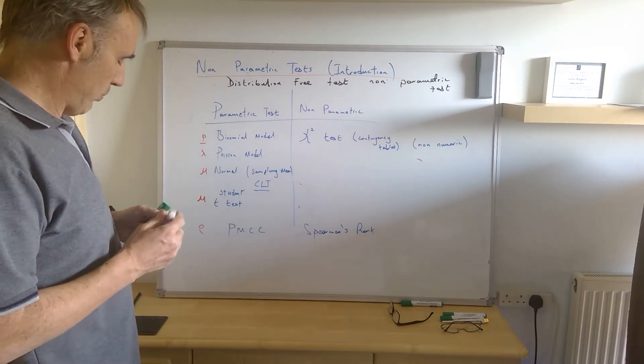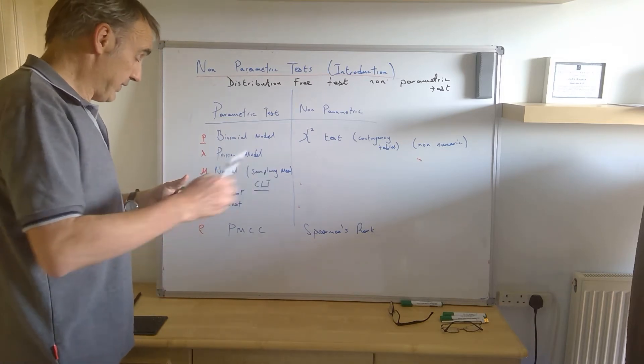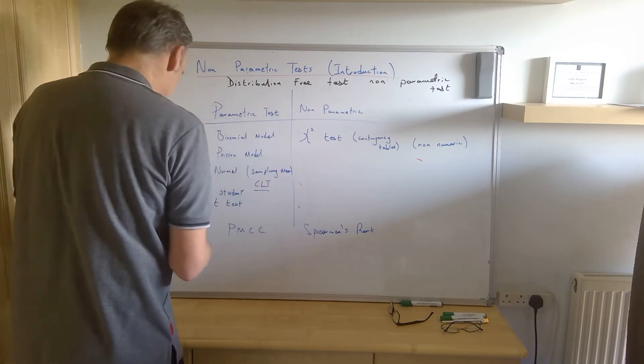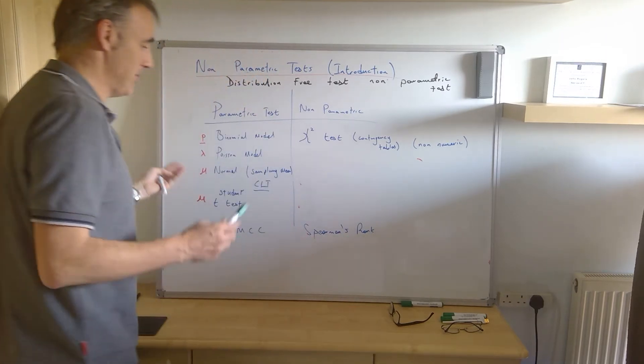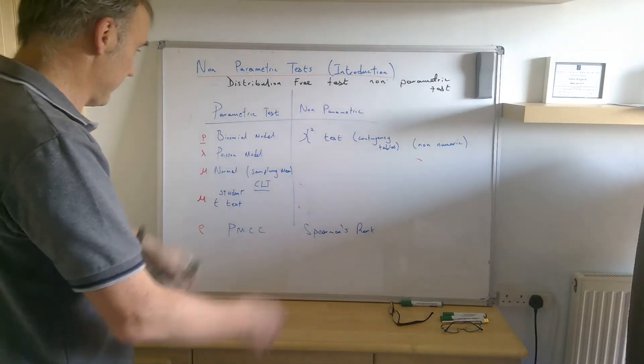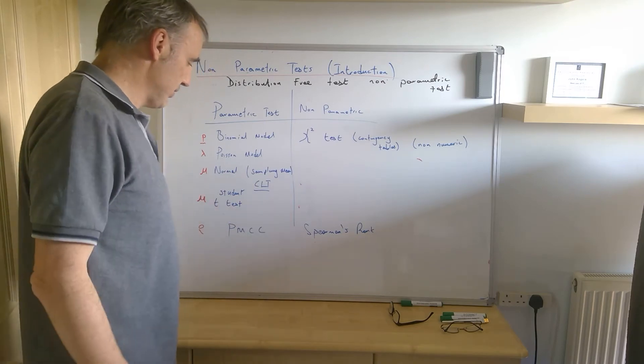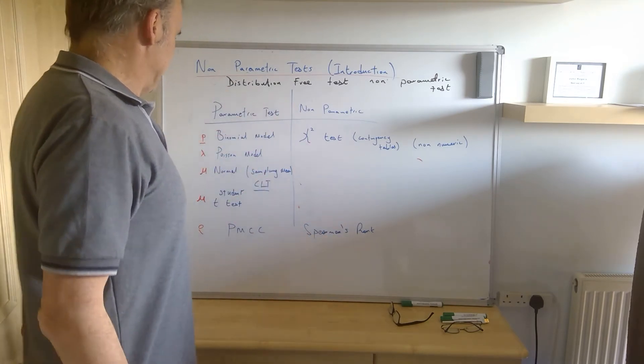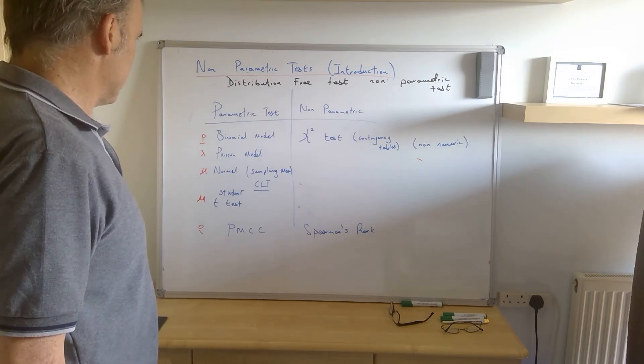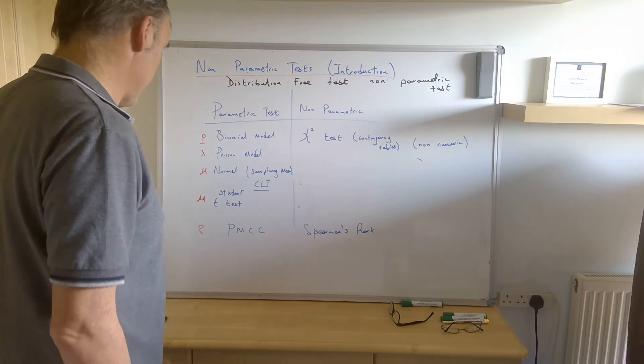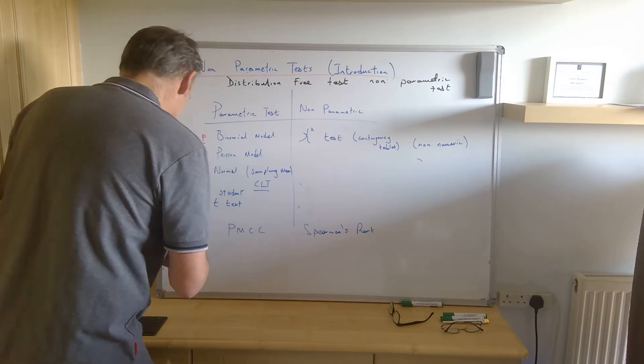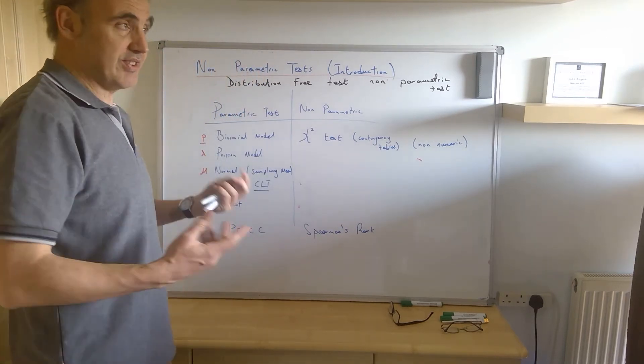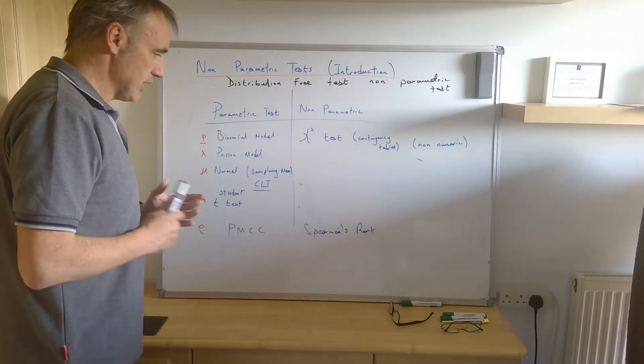Perhaps the most useful distinction, though, which is where our first video will start, the video following this, will be Spearman's rank. These two, our Pearson's product moment correlation comparison. This is the parametric version, and this is the non-parametric version of the test. And we'll actually in the video following this look at the decision between those two and why we would choose to do one or the other. Because it's a useful contrast to make, it gives us a very good background into what the difference between these two tests are and why we might choose one test as opposed to another.